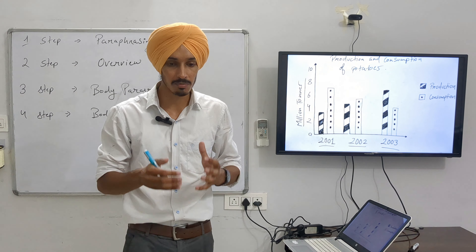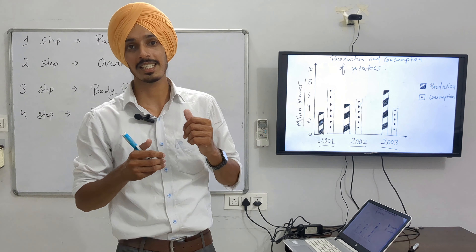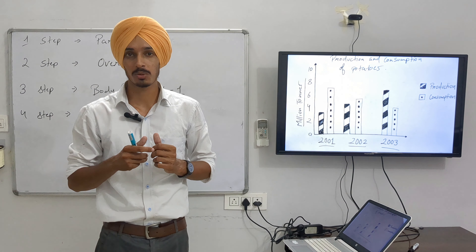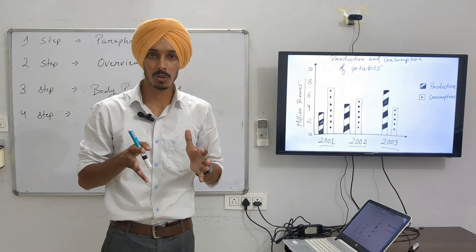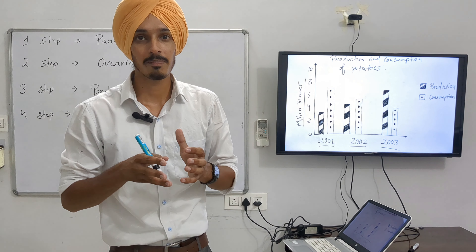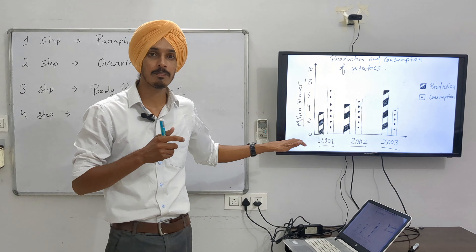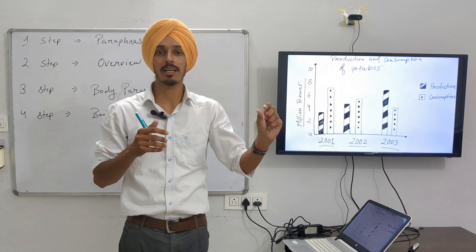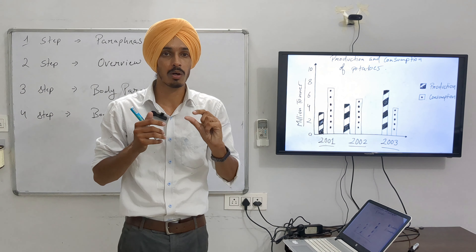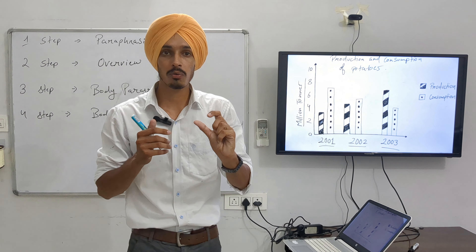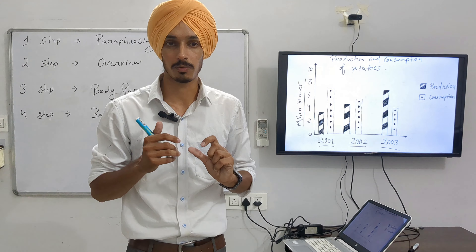The other two steps are body paragraph one and body paragraph two. In these paragraphs we actually describe the data. In the overview we just described the increase, decrease, maximum, and minimum, but we didn't give the actual data from the chart — like we didn't describe how much the production was in a given year. For example, as it is approximately seven million tons in 2001, we need to state that. In the body paragraphs we are required to describe each and every percentage, number, and data point.